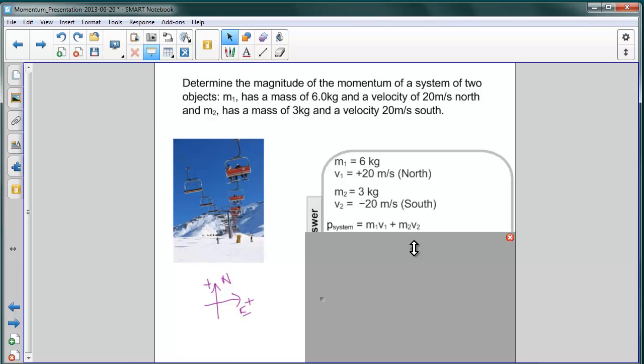Now, let's go ahead and substitute the values in here. For M1, we had 6 kilograms and 20 meters per second, and for the second object, we have 3 kilograms and negative 20 meters per second.